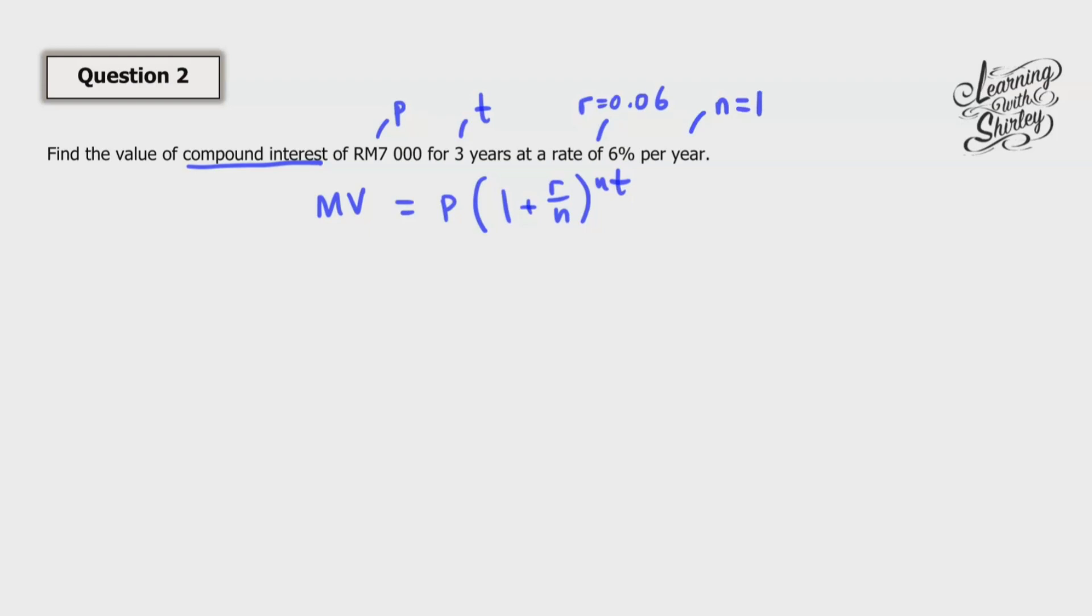So I'm going to extract out the information. I'm going to put it here. So P is 7,000. And then r is 0.06. And then n is 1 and t is 3. Remember P, r, nt.